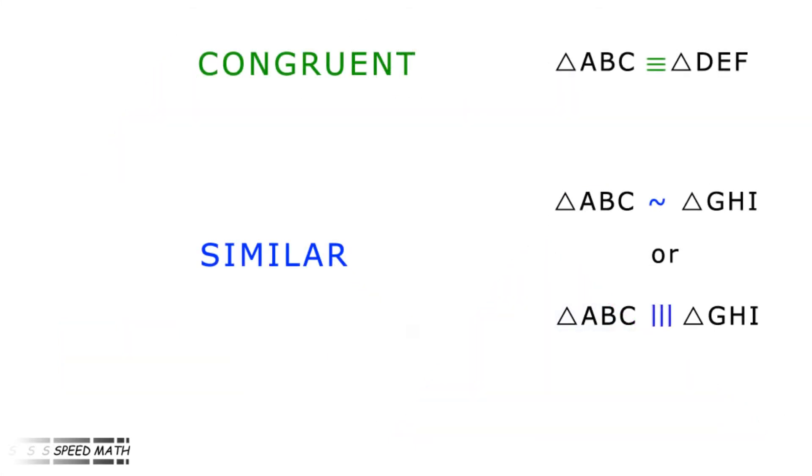Oh, and before I forget, there are symbols to describe whether two triangles are congruent or similar. Three horizontal lines between triangles means they are congruent. A horizontal squiggle, or three vertical lines means they are similar. OK, so let's do it.